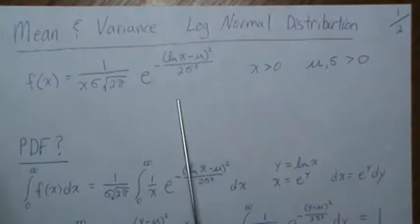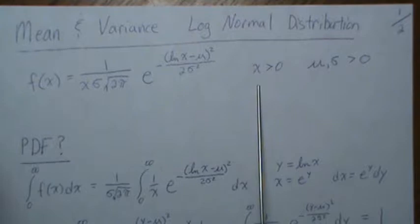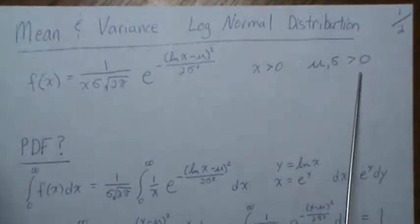Here is the PDF of the log normal distribution, its domain is positive numbers, the parameters mu and sigma are positive.